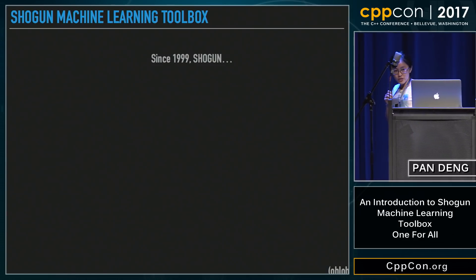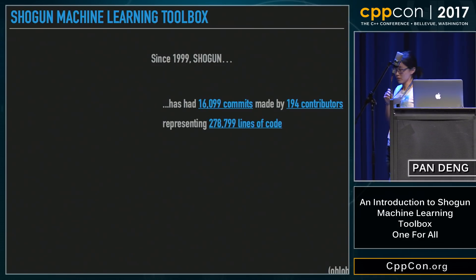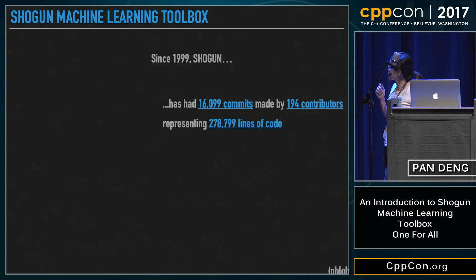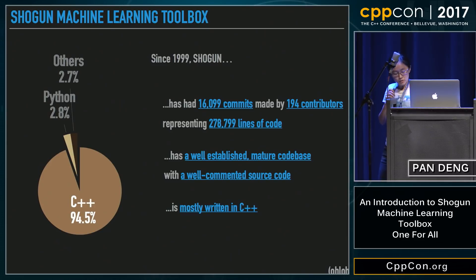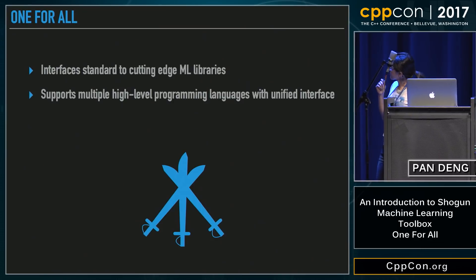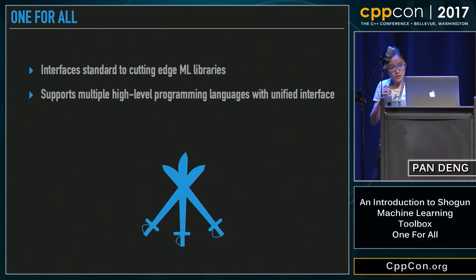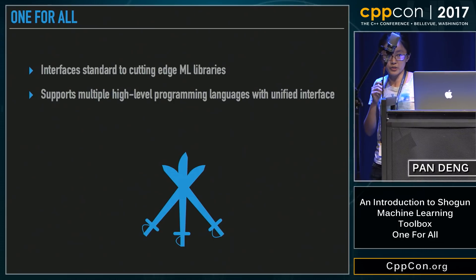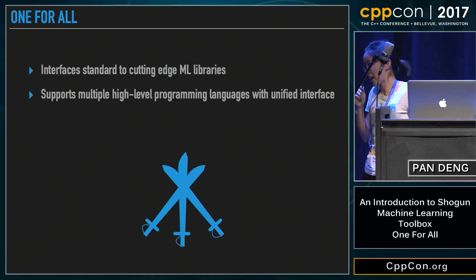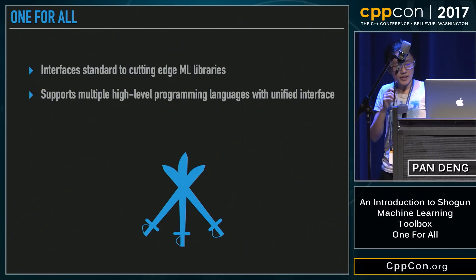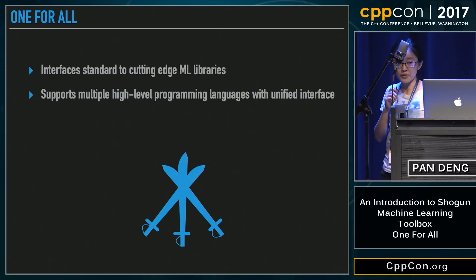Shogun was first established in 1999, and so far it has around 300,000 lines of code on GitHub. It is well established and well commented. Most notably, Shogun is mostly written in C++. Shogun is a highly integrated library which provides users abundant resources with a unified interface.